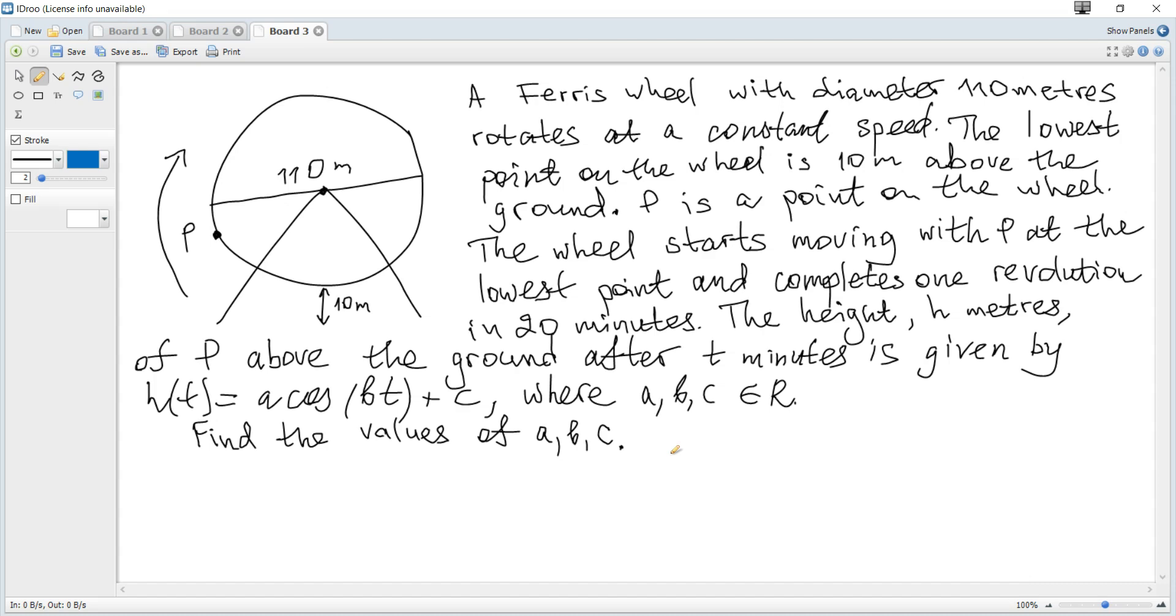A Ferris wheel with diameter 110 meters rotates at a constant speed. The lowest point on the wheel is 10 meters above the ground. P is a point on the wheel. The wheel starts moving with P at the lowest point and completes one revolution in 20 minutes. The height H above the ground after t minutes is given by H(t) = A cos(Bt) + C, where A, B, C are constants. Find the values of A, B, and C.